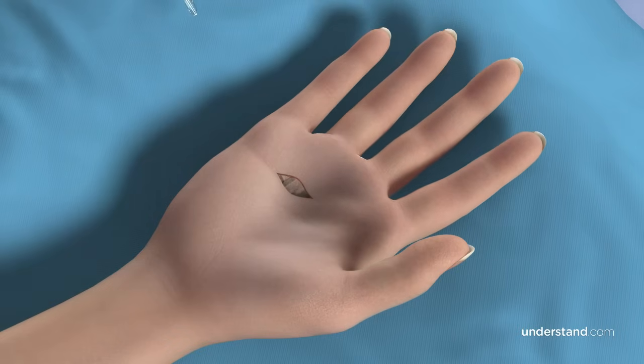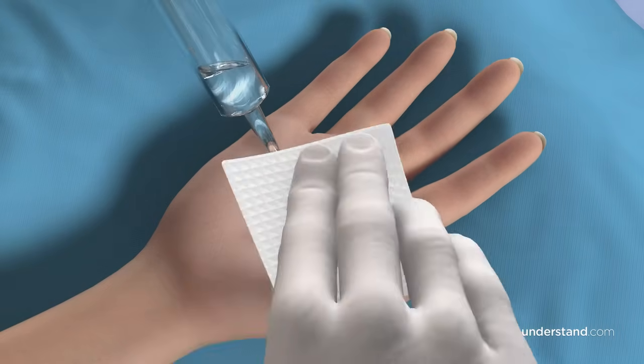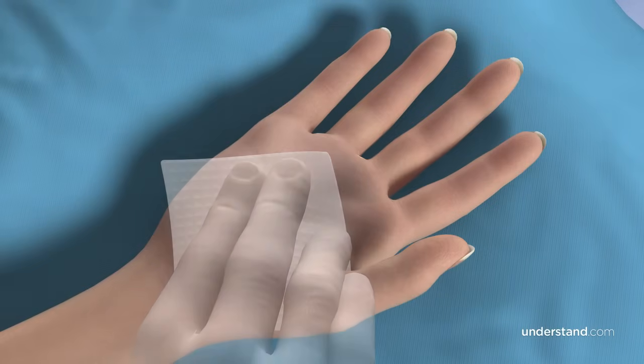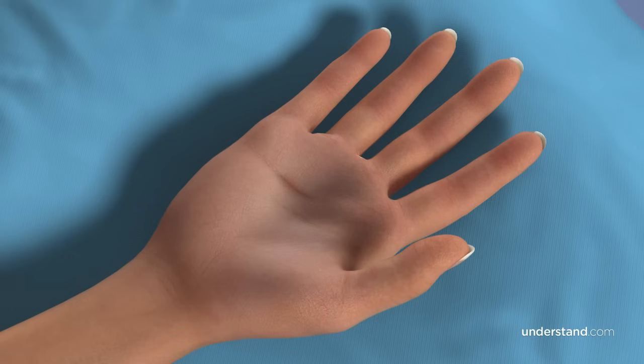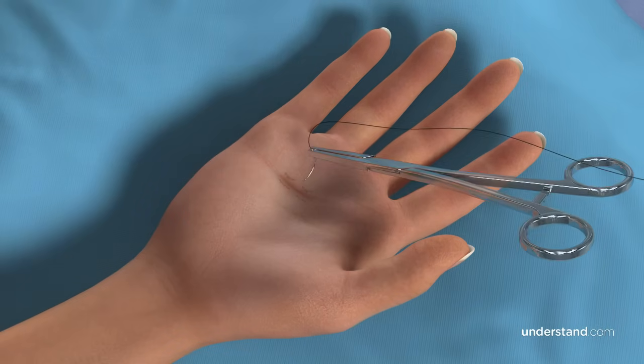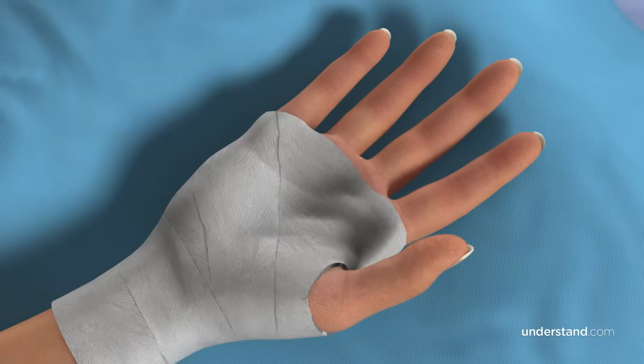To conclude, the wound is irrigated to remove any tissue residues, and the tourniquet is released. A local anesthetic may be injected to minimize pain after the procedure, and the incision is closed with a few sutures. Finally, a bandage and dressing are applied.